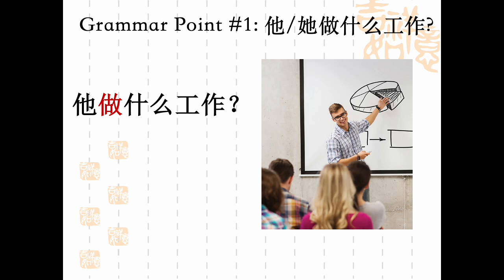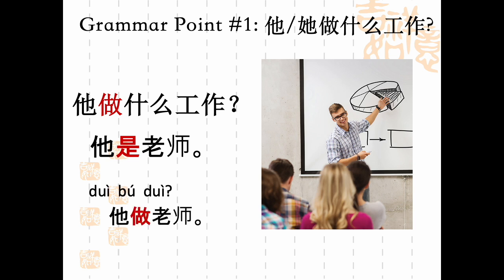Here's a common error I sometimes see with this grammar pattern. If someone asks 她做什么工作, you should say 她是老师 — she is a teacher. But what about 她做老师？Exactly — 不对. You would never say this in response to a question about someone's profession. Instead, the verb you want to use in response is always 是.